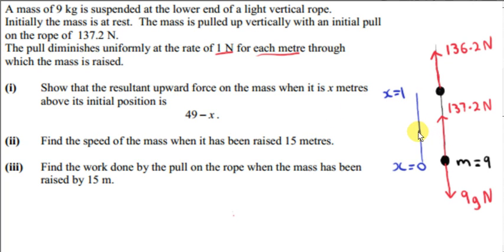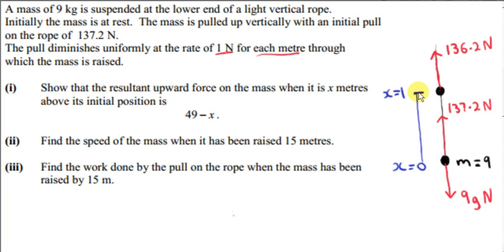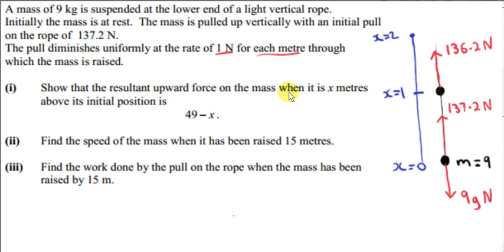After half a meter, the upward pull on the rope will be 137.2 minus 0.5. Since the rate of diminishment is uniform, it doesn't matter how small the distance is — we can easily work out the decrease in the pull at any particular distance. At x equals 2, when the particle has moved through 2 meters, we subtract 2 from the initial pull. In the first question, we want to show that the resultant upward force when the mass is x meters above its initial position is 49 minus x.